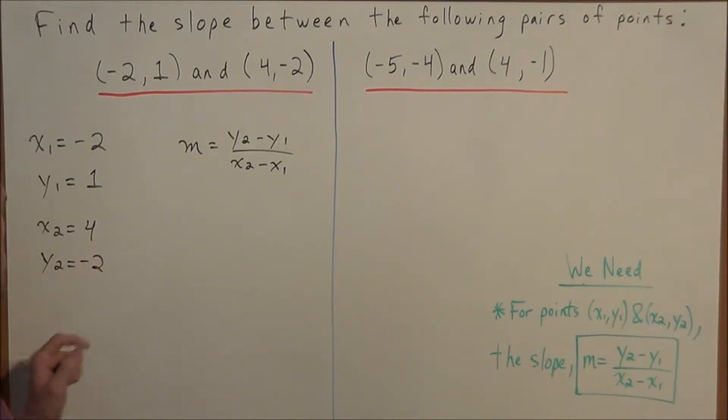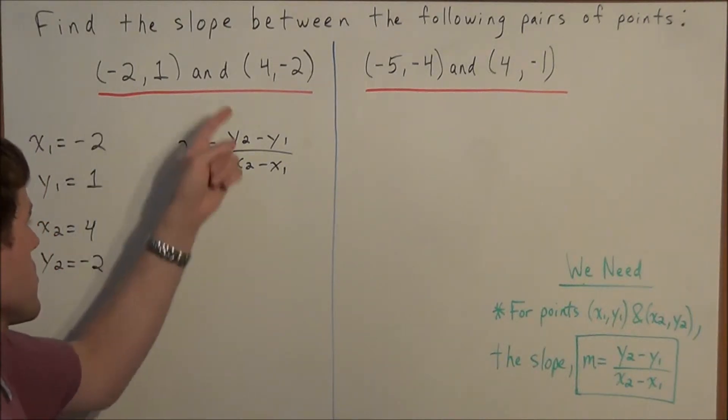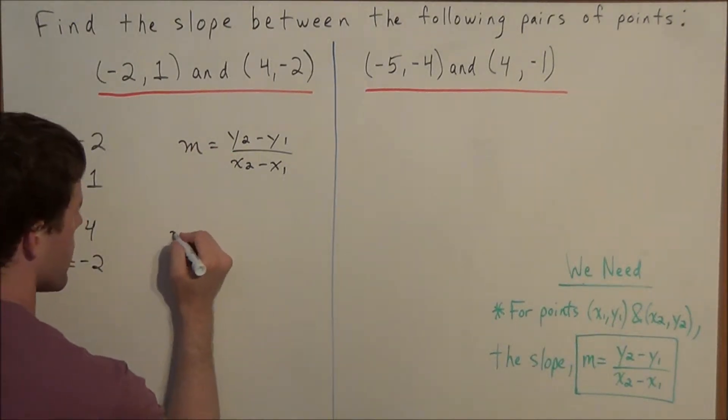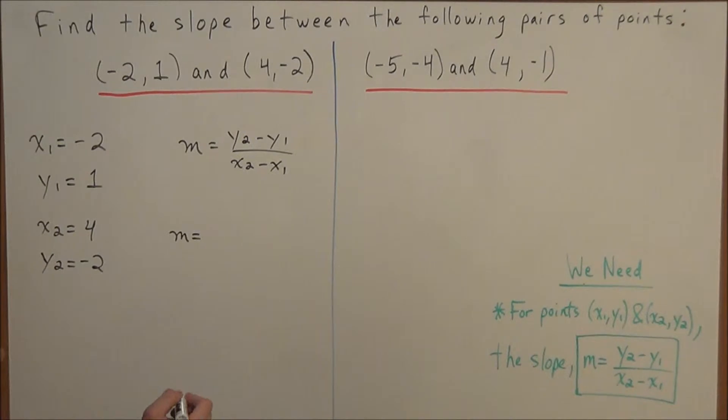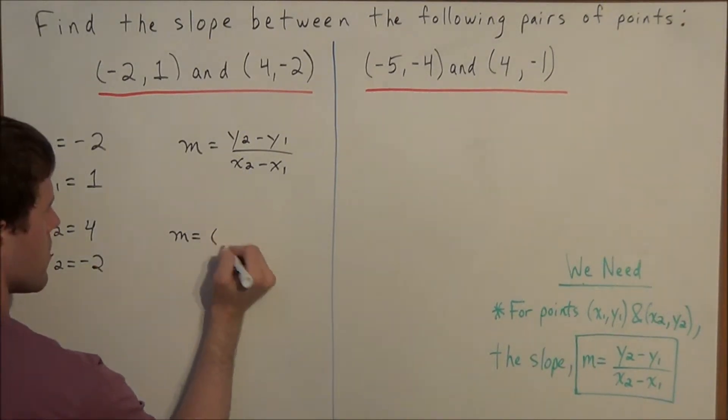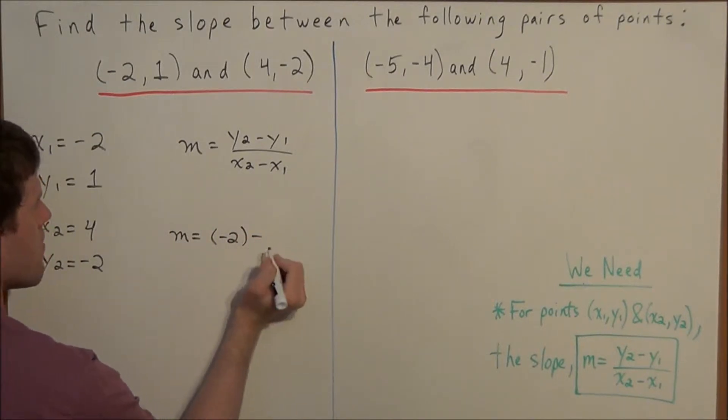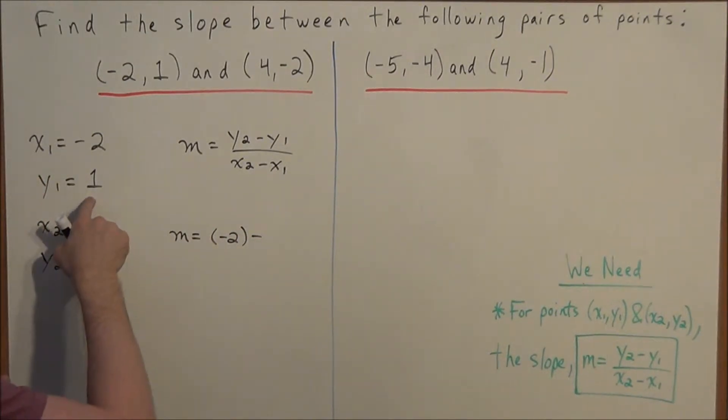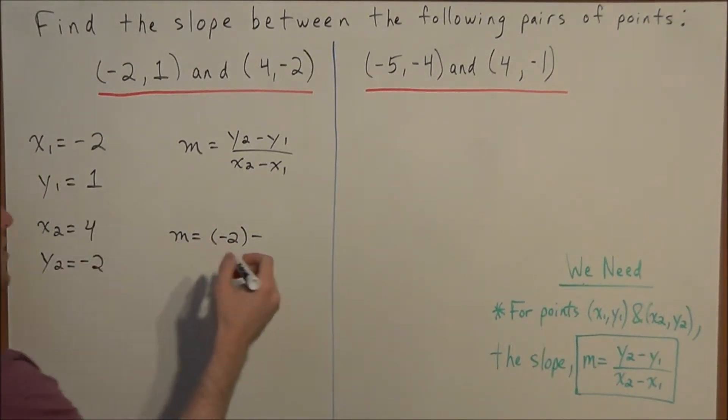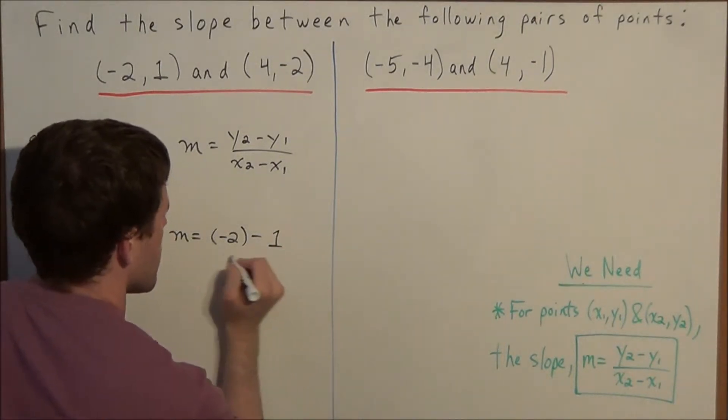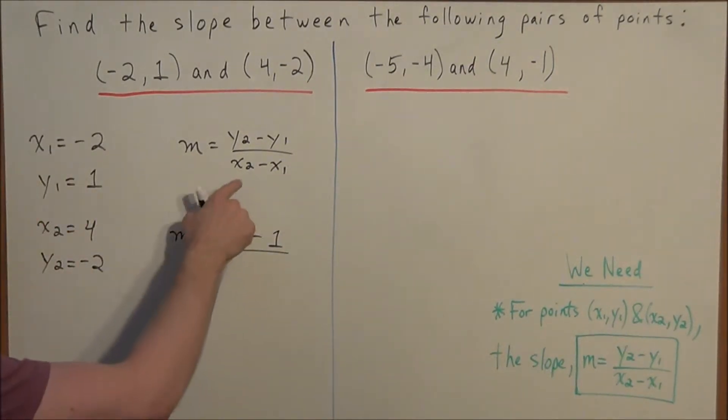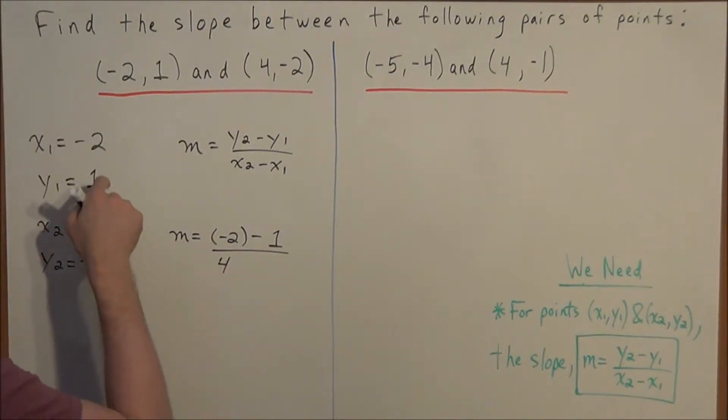So now all we need to do is just substitute these four values into the slope equation to find the slope between these two points. So now we have m equals, and now y2, we're just going to substitute, we have y2 is negative two. So negative two minus y1, y1 we set that equal to one. And now divided by x2 minus x1, we have an x2 of four, and we have an x1 of negative two.